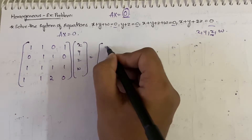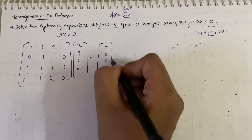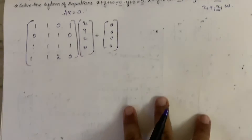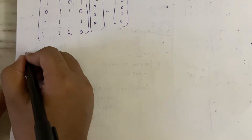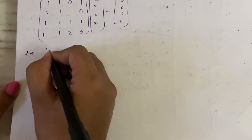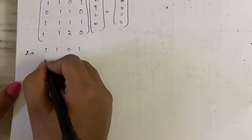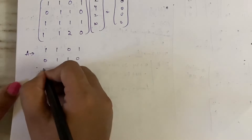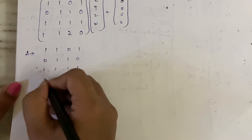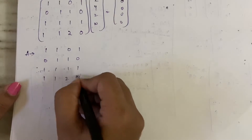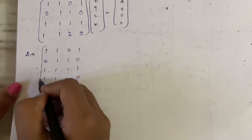So Ax equals the variable matrix [x, y, z, w]ᵀ = zero matrix. Now consider the matrix A: [1, 1, 0, 1; 0, 1, 1, 0; 1, 1, 1, 1; 1, 1, 2, 0]. We need to reduce this to echelon form.